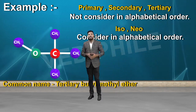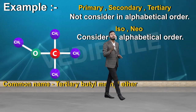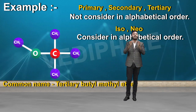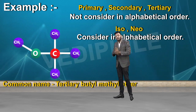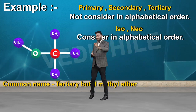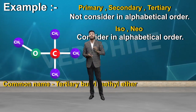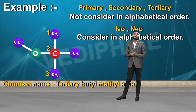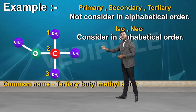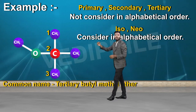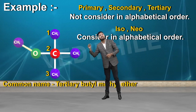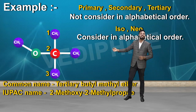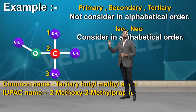IUPAC name के लिए numbering करनी पड़ेगी: 1, 2, 3। Second position पर methoxy है और second position पर ही methyl दिख रहा है। That means: 2-methoxy, 2-methyl propane। यह इसका IUPAC name होगा।